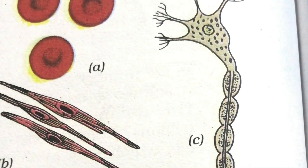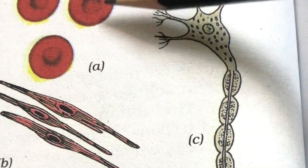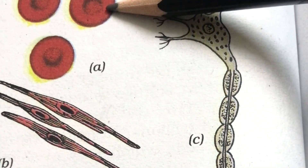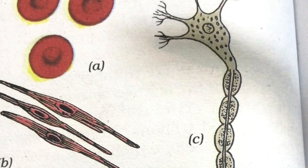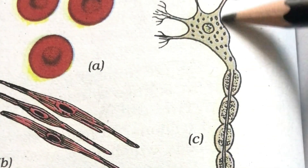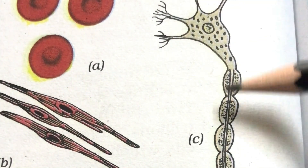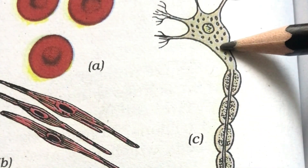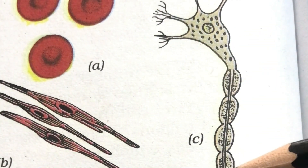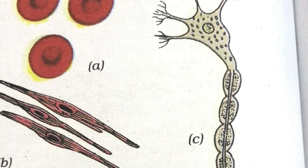This diagram clarifies the shape, structure, and function of cells further. RBCs are round and circular because their main function is to transport blood to different parts of the body, and this shape facilitates that function. The neuron is branched and elongated so that it can easily conduct nerve impulses to and from the brain — this branched structure facilitates its specialized function.